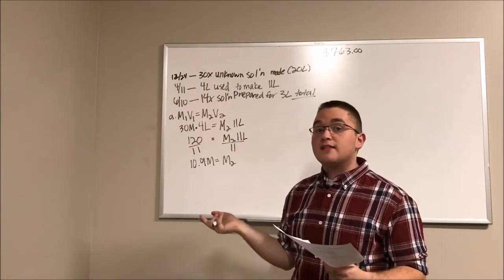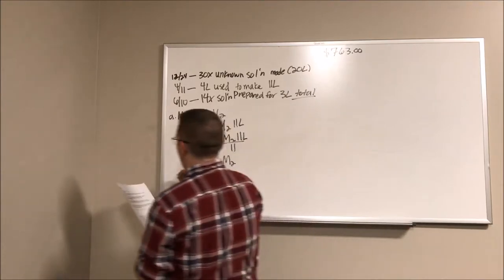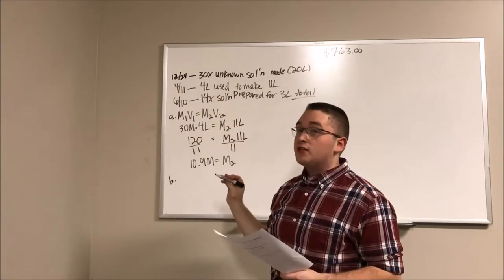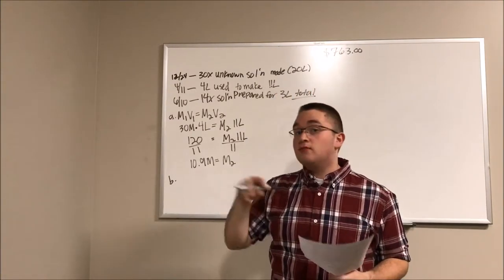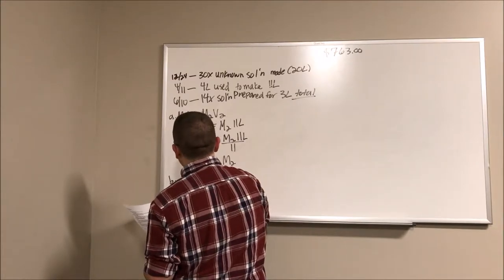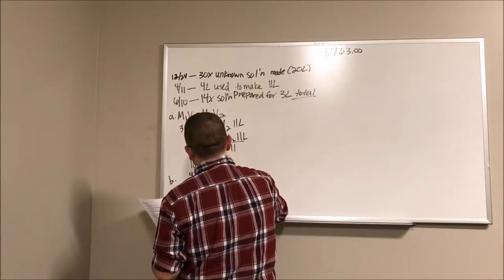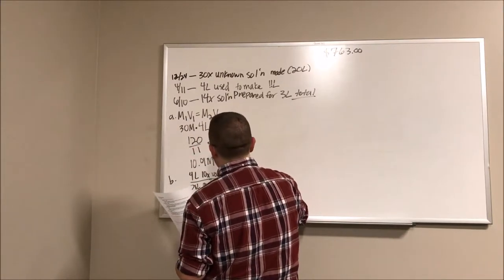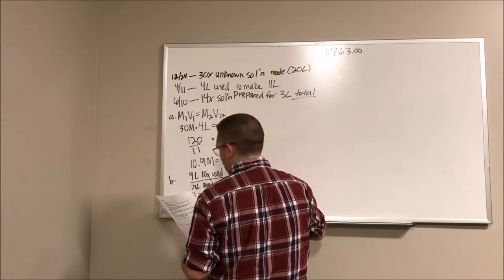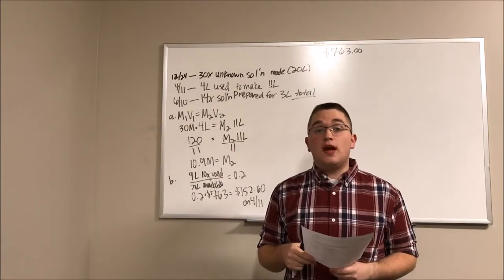So number two asks us to apply this to cost calculations. So this is something we're probably not going to be doing a lot in our lab, but it's something that's important to know if you work in a lab in the future. So letter B. So we know that we used 4 liters, right, to make our solution of 11 liters. So we're not going to need to know the 11 liters for this problem. That's irrelevant. We only used 4 liters of the stock and we had 20 total. So if we take 4 liters of the 30X divided by the 20 liters that were available, we get a decimal of 0.2. And then we can multiply that by our total cost of $763 to find out that we utilize $152.60 on 4-11. So this is just a helpful calculation to have in your back pocket just in case you have to calculate anything in the lab in the future.